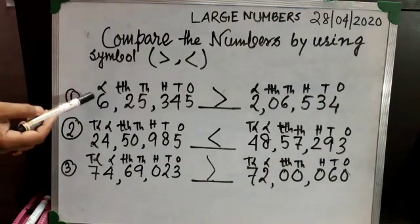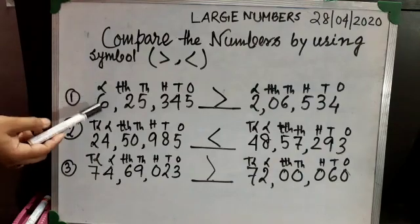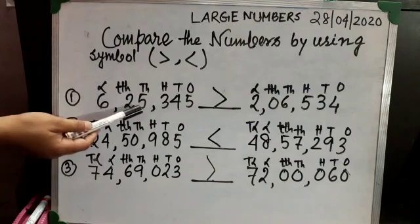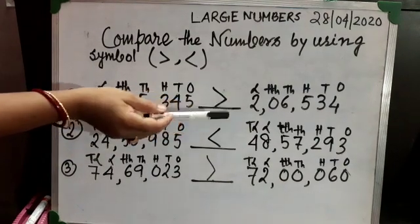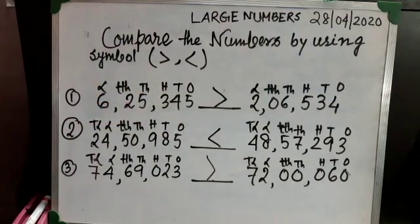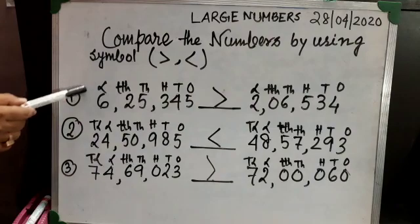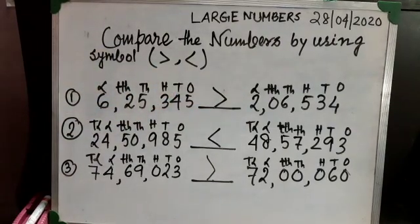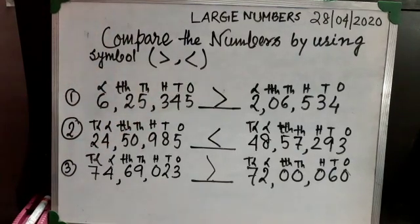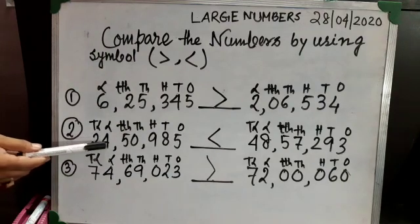The first number is six lakh twenty-five thousand three hundred forty-five, and the next number is two lakh six thousand five hundred thirty-four. Here the first number has six lakhs but the second has only two lakhs, so you can easily understand that two lakh is smaller than six lakh, and we give the sign accordingly.